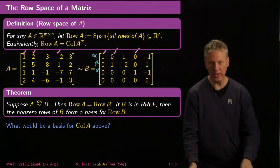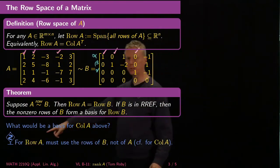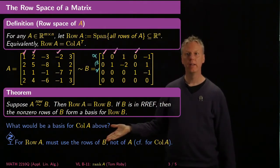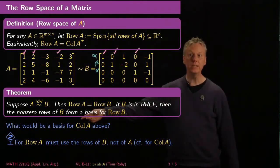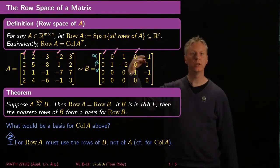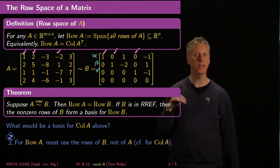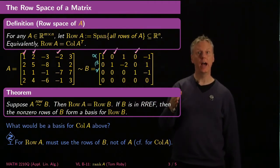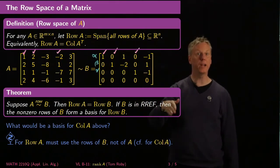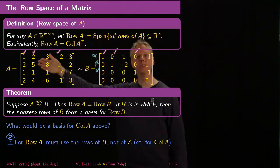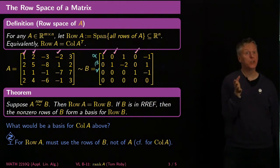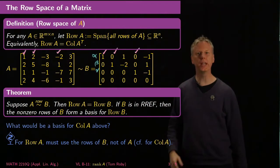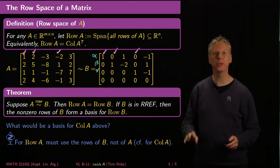I want to highlight this with the dangerous curve symbol: if I want a basis for the row space of A, I have to use the rows of the row reduced echelon form B, not of A itself. But for the column space of A, I have to use B to figure out which are the pivot columns, and then go back to the original A. This perennially trips people up, and there's usually a problem about it on the final exam, so get this straightened out now.